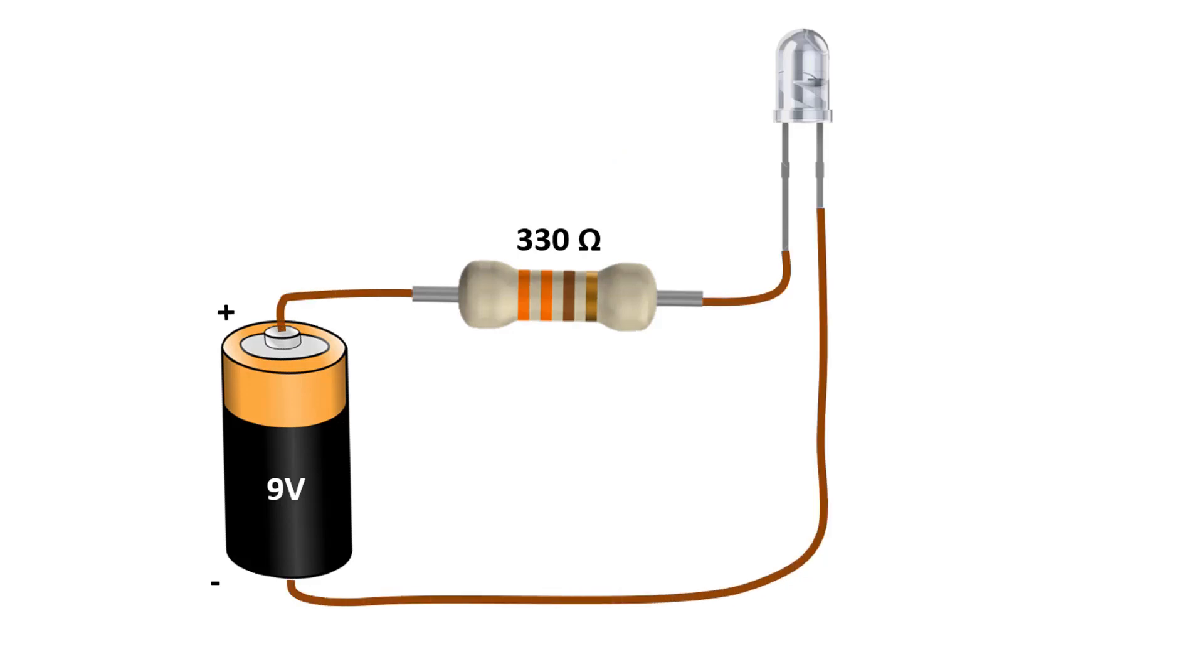But if we connect a 330 ohm resistor to this circuit, the current will be about 27 milliamps. This current is a suitable current for the LED to work properly. If we increase the value of the voltage source, we need to choose the appropriate resistor with this principle. Here, some voltage is also consumed on the LED, but I did the calculation by ignoring it. It is also worth noting that.